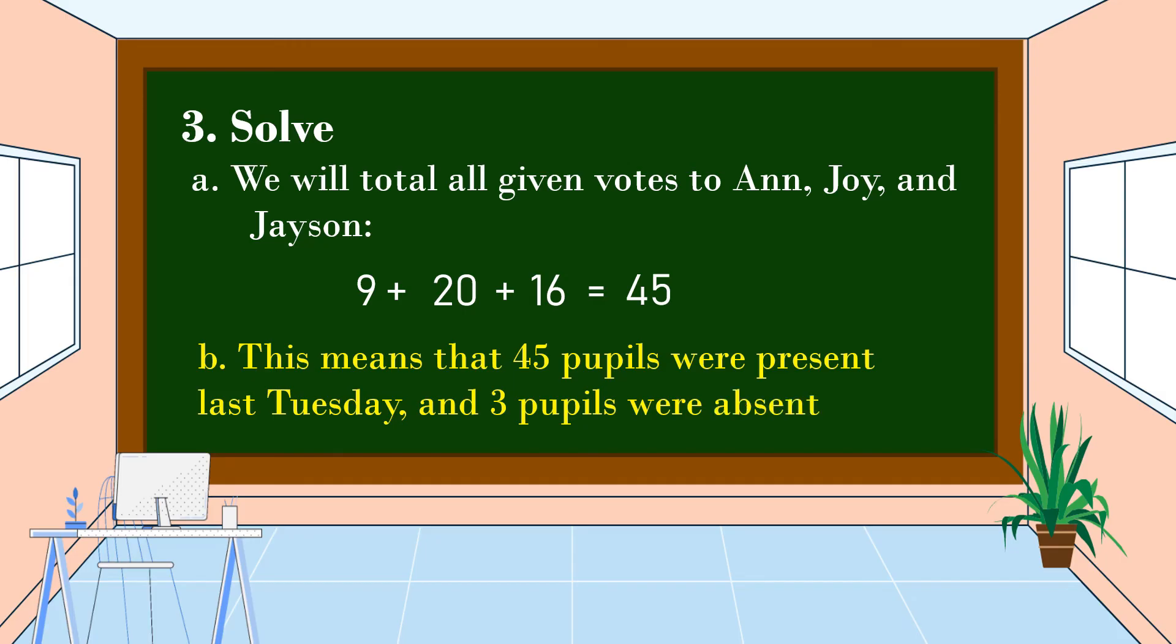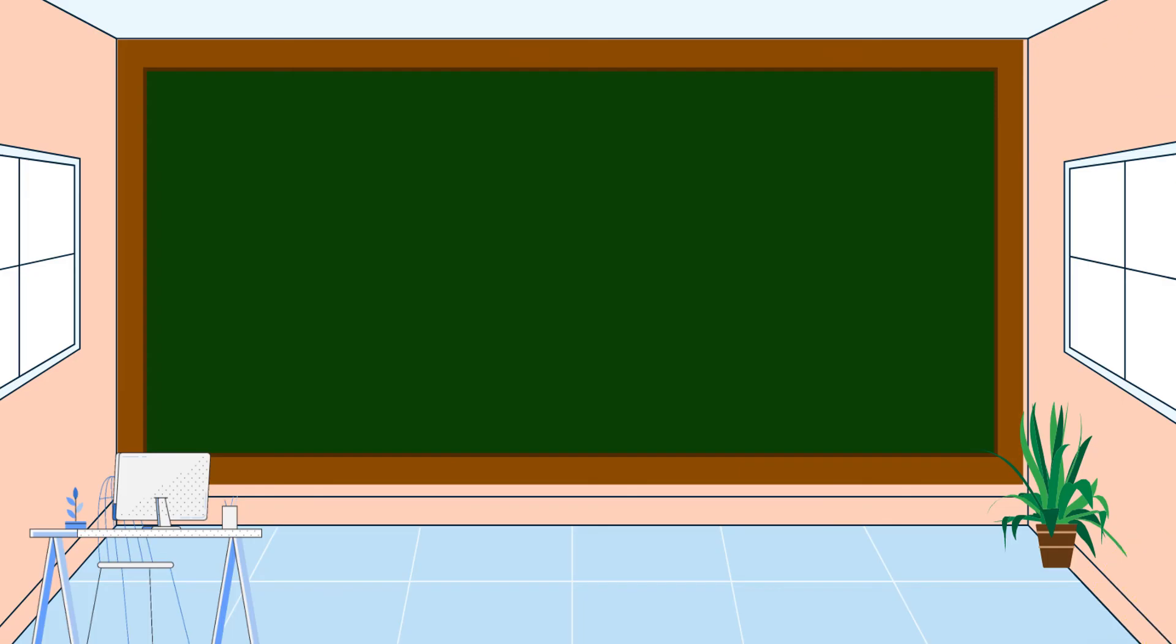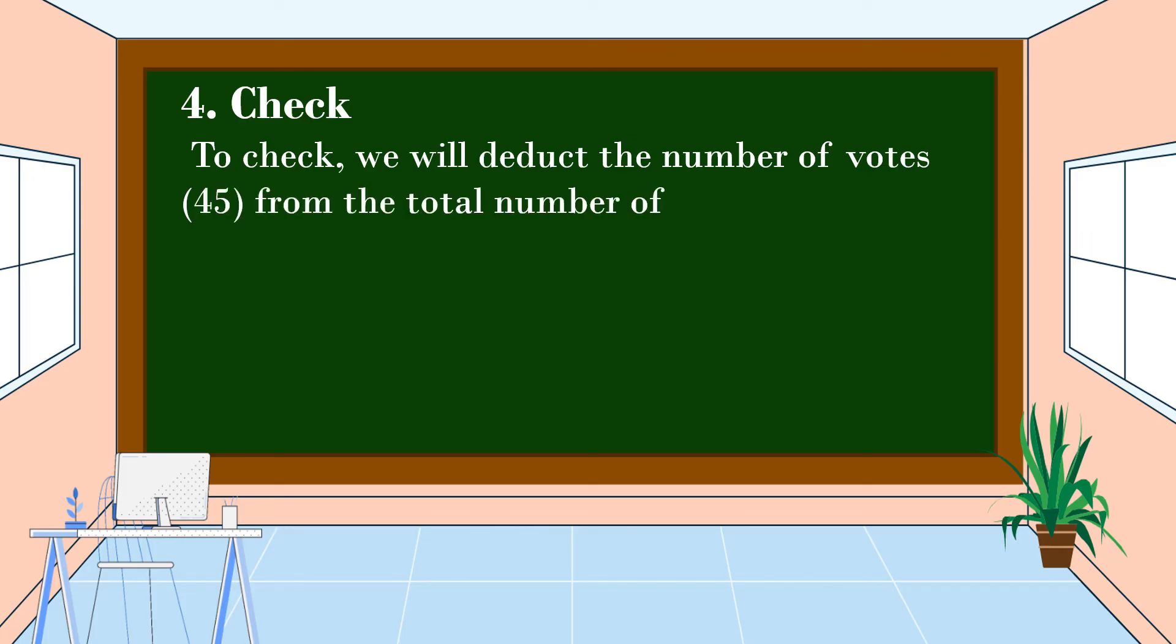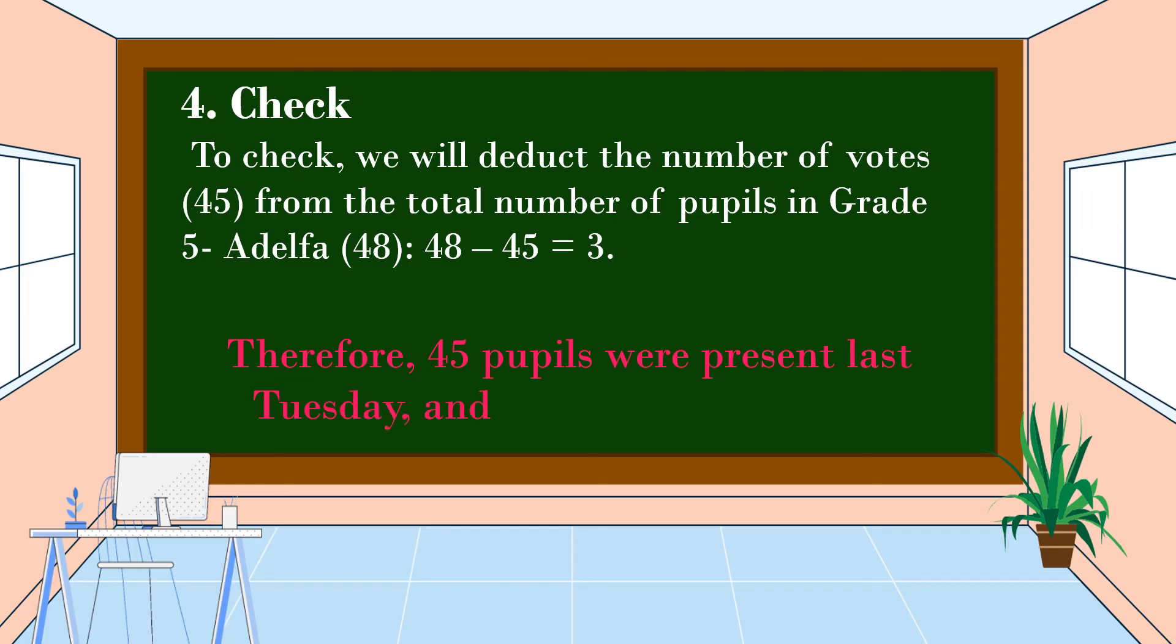Yes, we already solved the problem. The last step is we're going to check. To check, we will deduct the number of votes which is 45 from the total number of pupils in Grade 5 Adelpha which is 48. So 48 minus 45 is equal to 3. Therefore, 45 pupils were present last Tuesday and three pupils were absent.